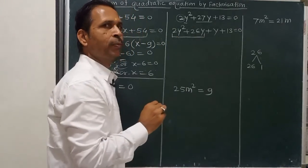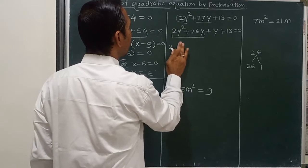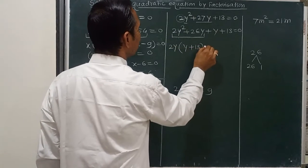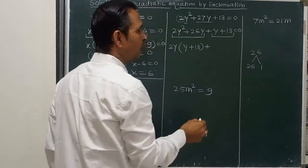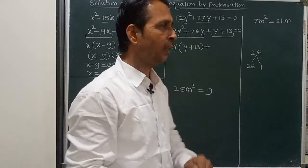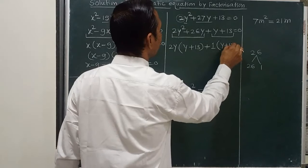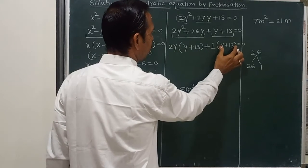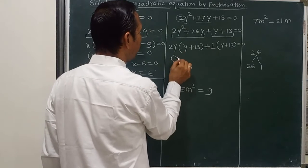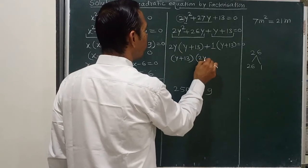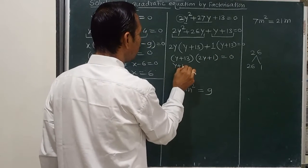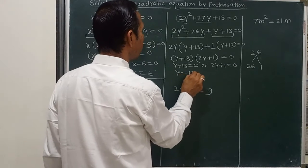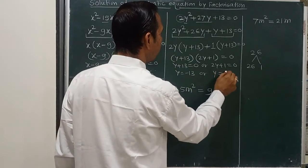Take out the common from the first two terms. The common is 2y, giving 2y times (y plus 13). From the last two terms, there is no common factor other than 1, so we get 1 times (y plus 13). Now y plus 13 is the common bracket, giving (y plus 13)(2y plus 1) equals 0. Therefore y plus 13 equals 0 or 2y plus 1 equals 0, which means y equals minus 13 or y equals minus 1 over 2.